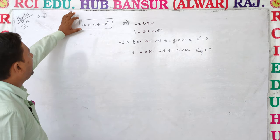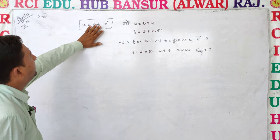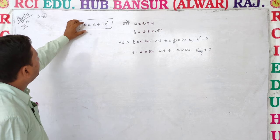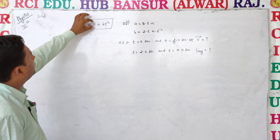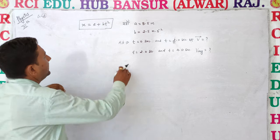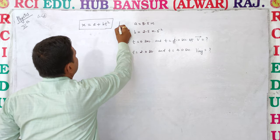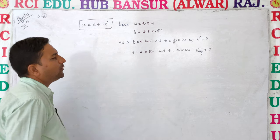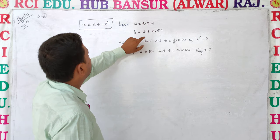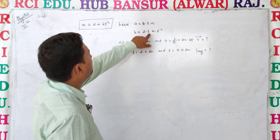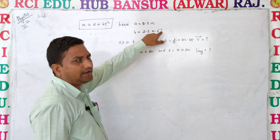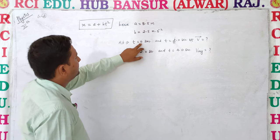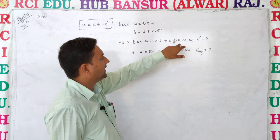The equation of displacement is x is equal to a plus bt squared. Here, a is equal to 8.5 meters and b is 2.5 meters per second squared. The time values given are t is equal to 0 seconds and t is equal to 2 seconds.